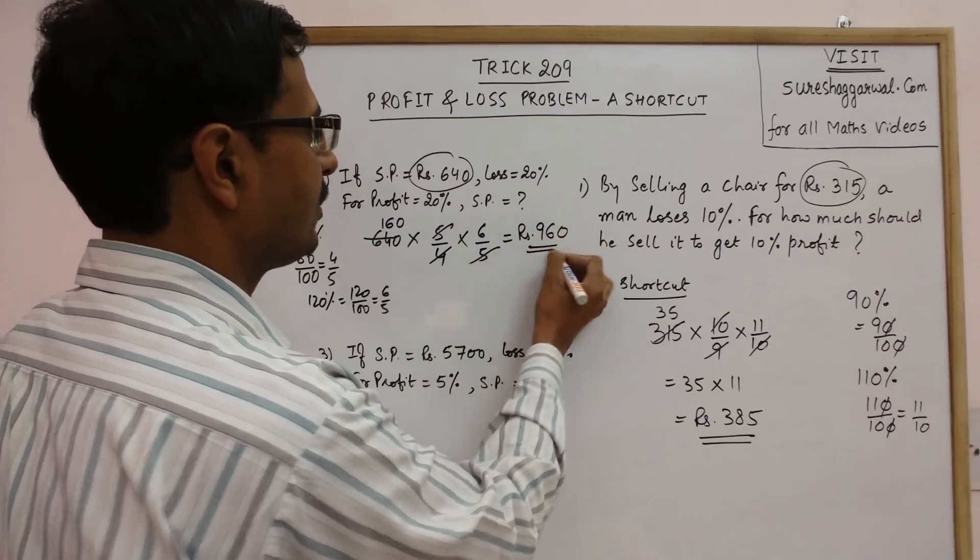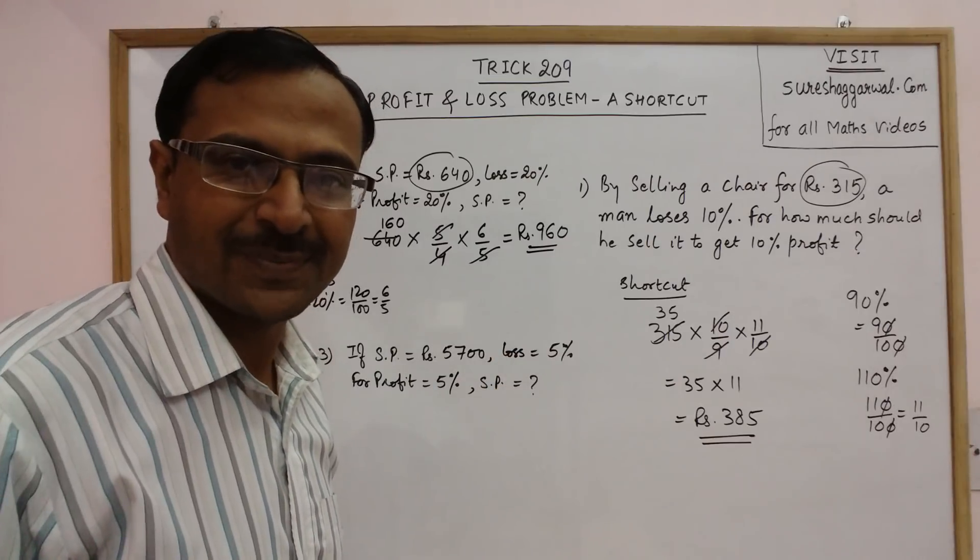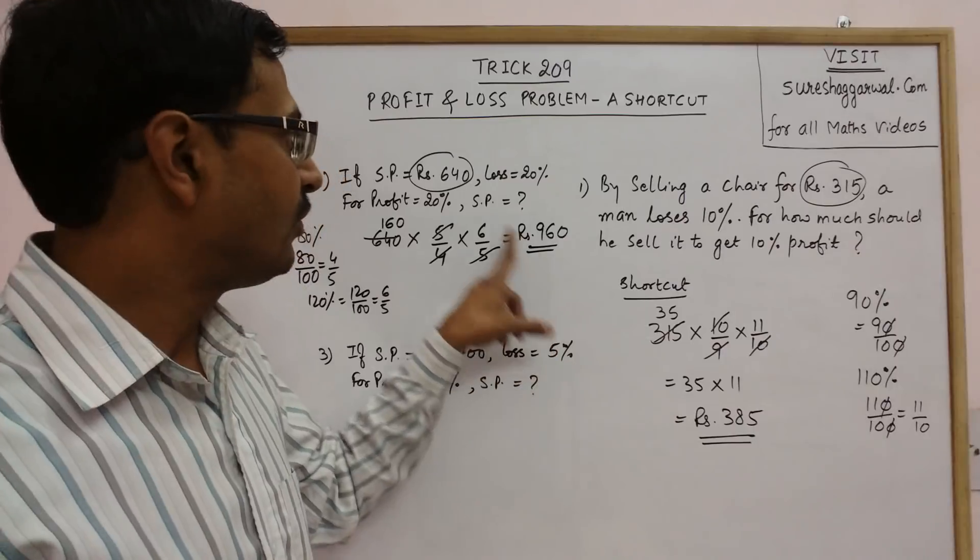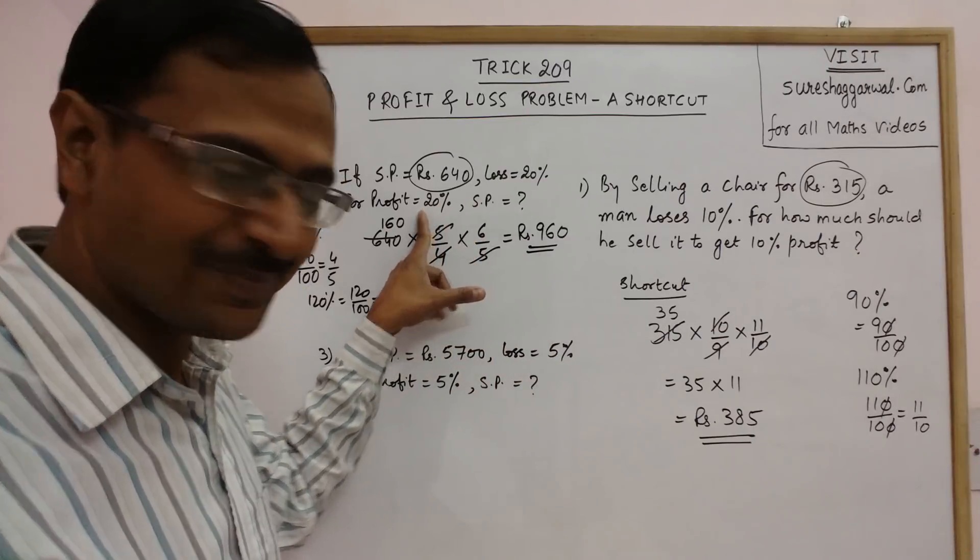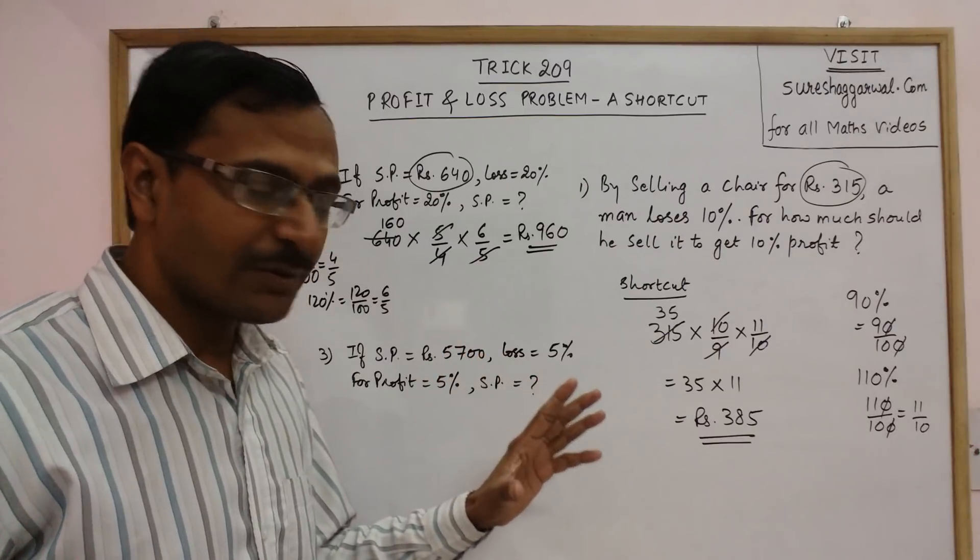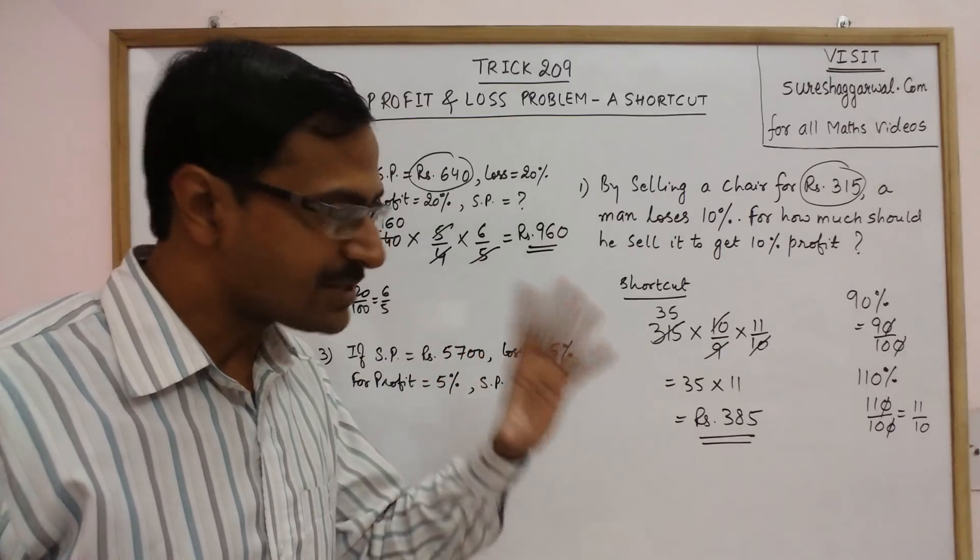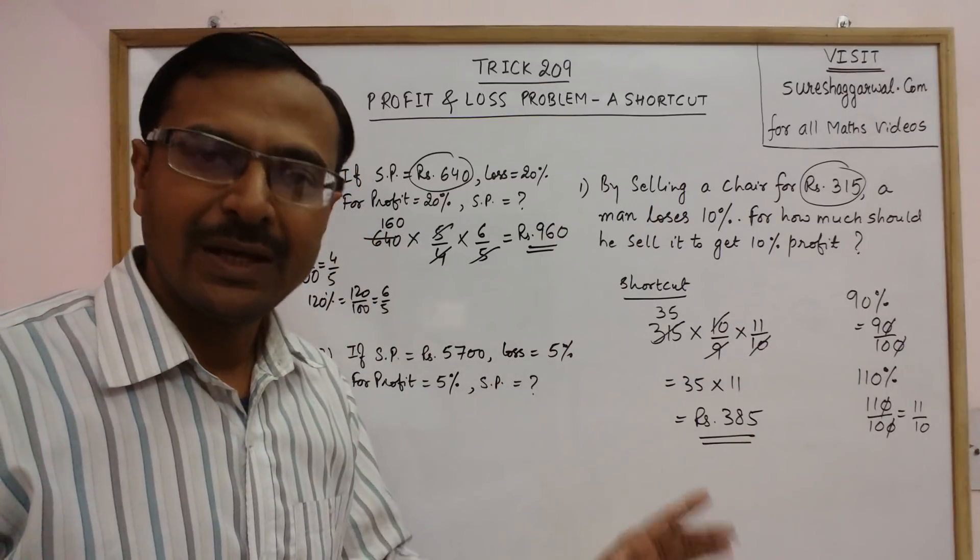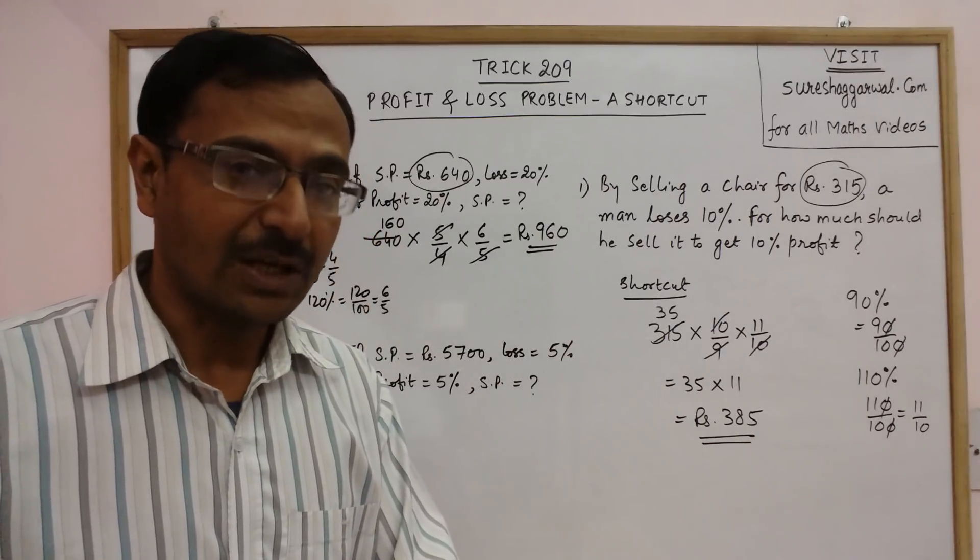The item has to be sold for rupees 960 to have a profit of 20%. Very easy, and through practice of 5 to 6 minutes with 10 questions like this, you are bound to solve this in 5 to 6 seconds time only.